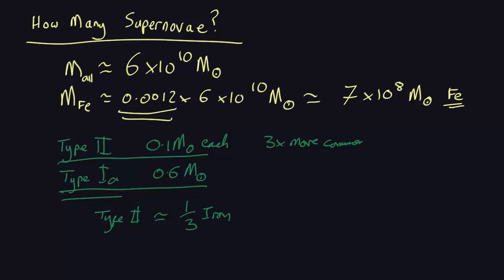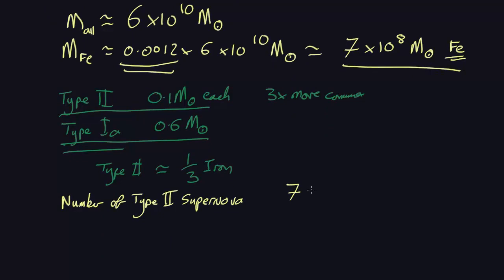Let's look at the type 2s, for example. So, the number of type 2s is going to be about this mass, 7 by 10 to the 8 solar masses,